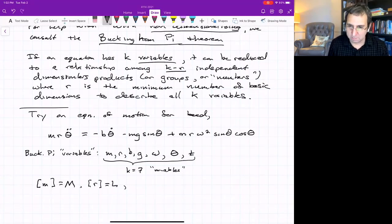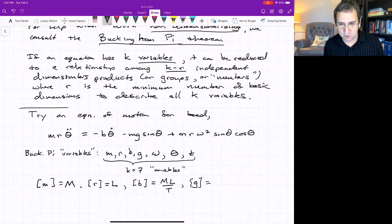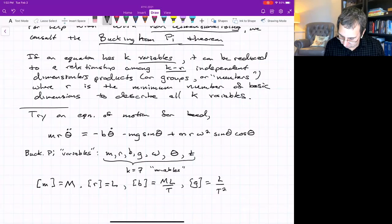Dimensions of the radius of the hoop, well, that's a length. You have to do some work to find out what dimensions of b is. But because that equation is dimensionally homogeneous, it turns out that that damping term has dimensions of mass times length over time.